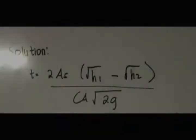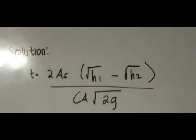So using the formula, t is equal to 2 times A_s times the square root of h1 minus the square root of h2, over c times A times the square root of 2g.